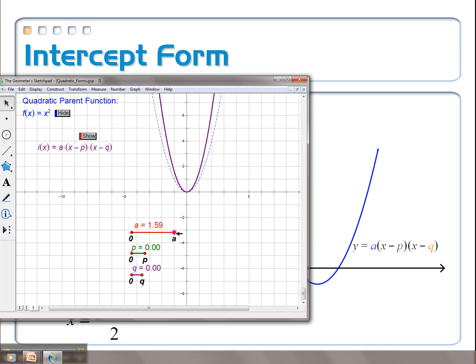When I make a bigger, you can see just like before, it makes my parabola skinnier. When I make it closer to zero, it makes it fatter. And if I make it negative, it flips over the x-axis. And there's your bird again.